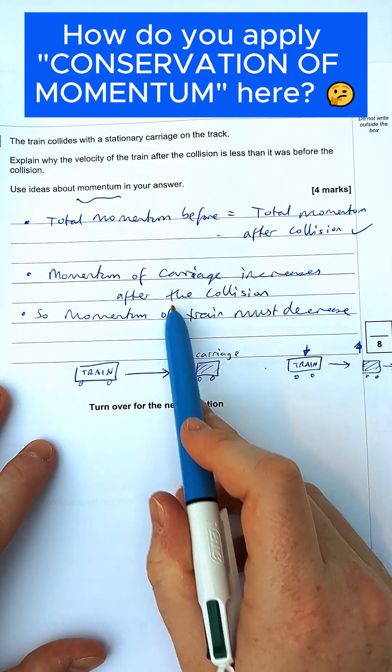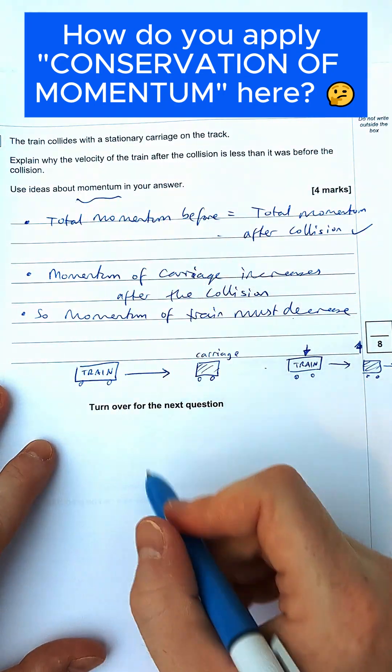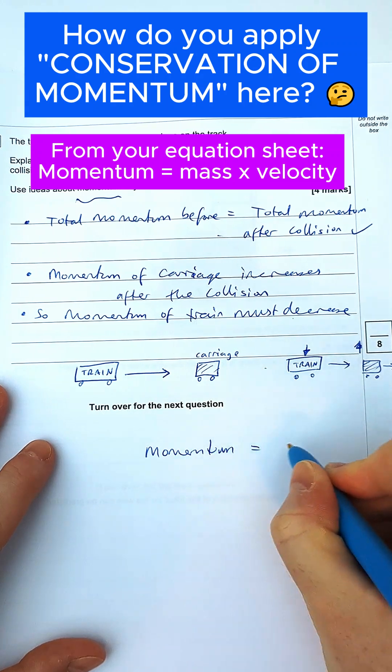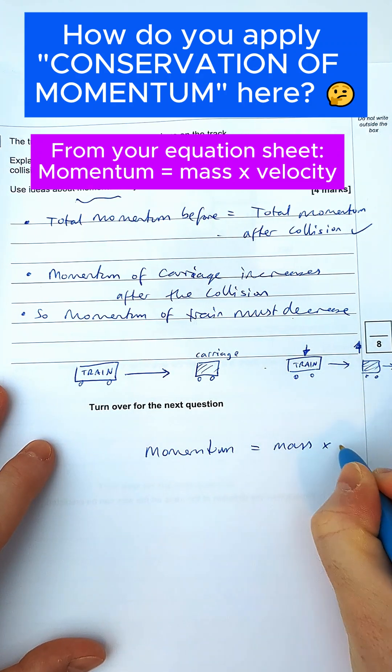The question doesn't ask us about momentum, it asks about velocity. So we need to link momentum to velocity. The equation, which is on your equation sheet, says momentum equals mass times velocity.